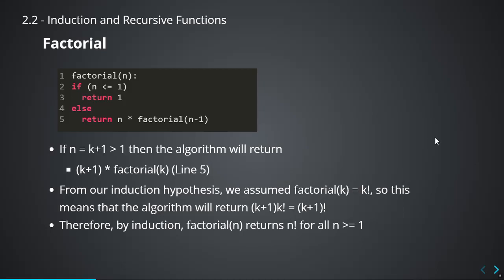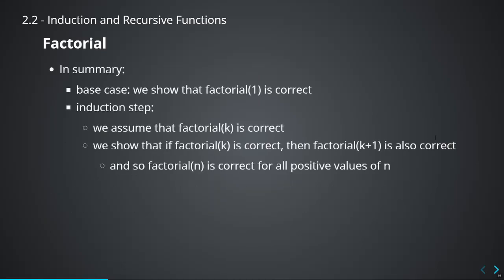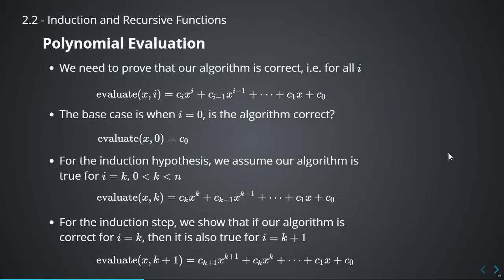So if the algorithm is correct for k, it will also be correct for k plus 1, and we've proved by induction that factorial(n) returns n factorial for all n greater than or equal to 1. In summary: we show the base case — factorial(1) is correct. Then in the induction step, we assume factorial(k) is correct, and show that if k is correct, then factorial(k+1) is also correct.